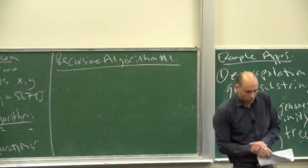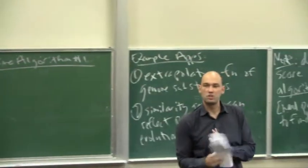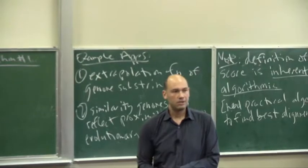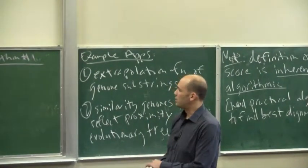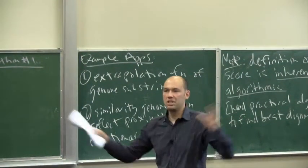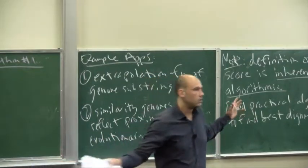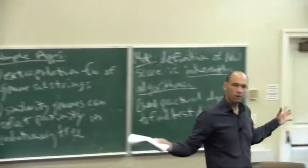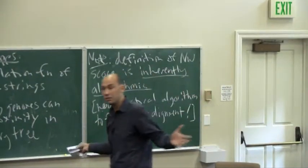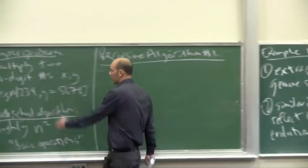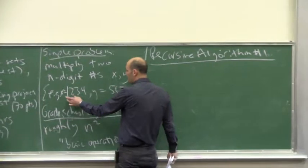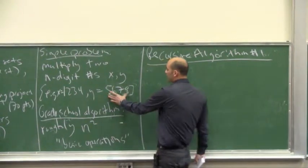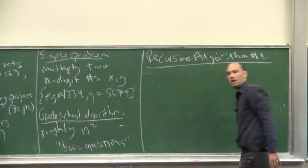So, to do recursion, you need to recurse on smaller subproblems. And so here, the only notion of how big a problem is is how many digits there are in a number. So, we somehow have to break a big number into numbers that have fewer digits. We're going to do that in what I claim is the obvious way. We're going to break 1, 2, 3, 4 into, in some sense, 12 and 34. We'll break this into, in some sense, 56 and 78.